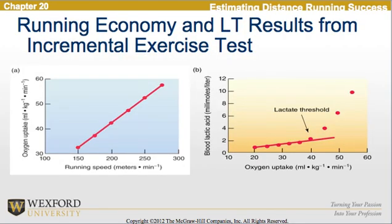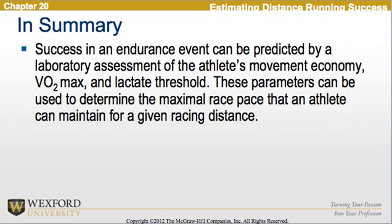The two graphs below reflect the running economy and the lactate results from the incremental exercise test just described. In summary, success in an endurance event can be predicted by a laboratory assessment of the athlete's movement economy, the VO2max, and the lactate threshold. These parameters can be used to determine the maximal race pace an athlete can maintain for a given racing distance.